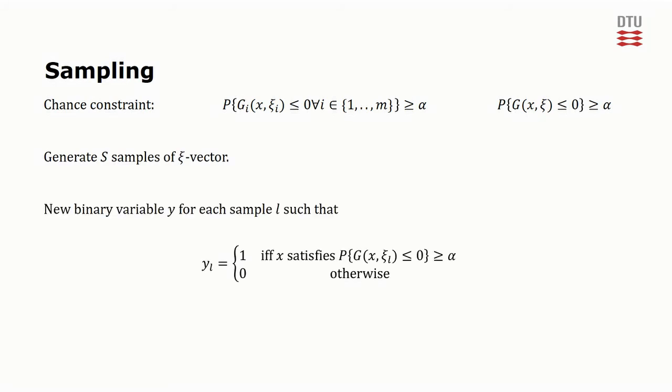Instead we use sampling. We have this chance constraint, which we can also write in its matrix form like this. We do not care about the individual constraints anyway, we want them all to be satisfied with probability alpha. We then generate s samples of the ξ vector, and introduce new binary variables y. We have a y for each of the samples, and the y's are defined such that yl, which is the y associated with sample l, is one if and only if the solution x satisfies the chance constraint.